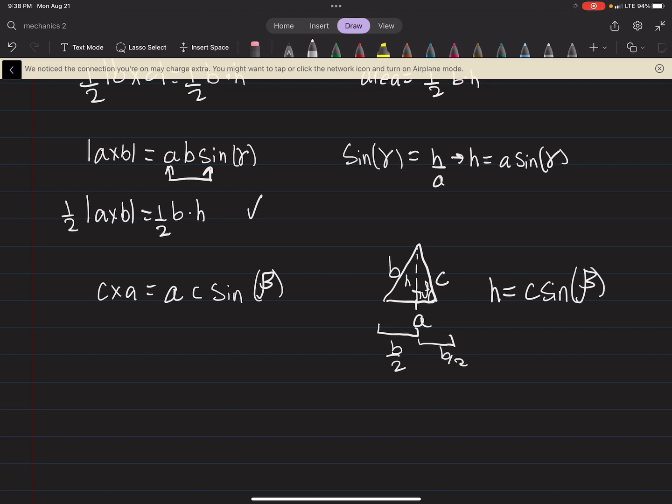So the area, then, is going to be one half the base times the height. And the base, in this case, is your vector A. But we want half of the base. So that's where the one half comes from.